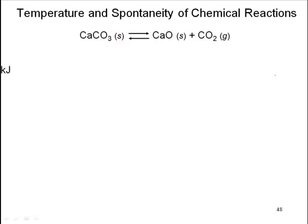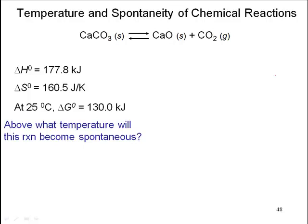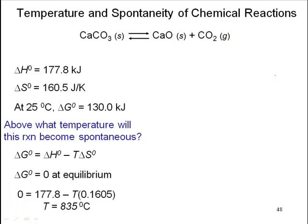Predicting spontaneity of chemical reactions. Delta H, delta S, and delta G for this equation here. Above what temperature will this reaction become spontaneous? So here we've got our equation. We'll plug in the values. This is an equilibrium equation. Delta G sub-naught equals zero at equilibrium. Here's our setup here. Temperature that it will be spontaneous is 835 degrees Celsius.